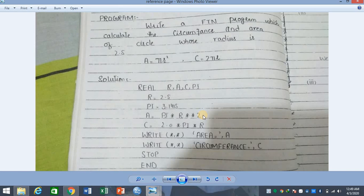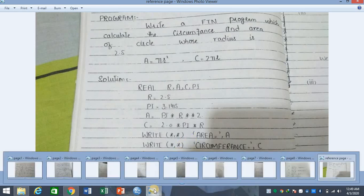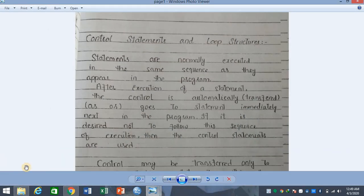By default, this sequence will be set. For example, if we want to choose a step after a certain step, it will execute after the circumference step, then stop and end. It means that if we want to change the control from our place, then we need control statements.